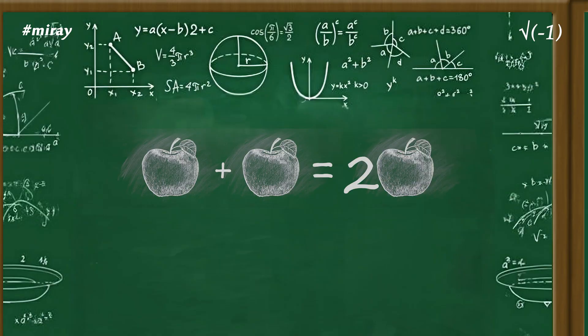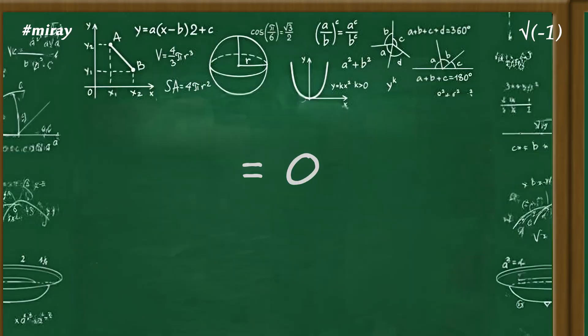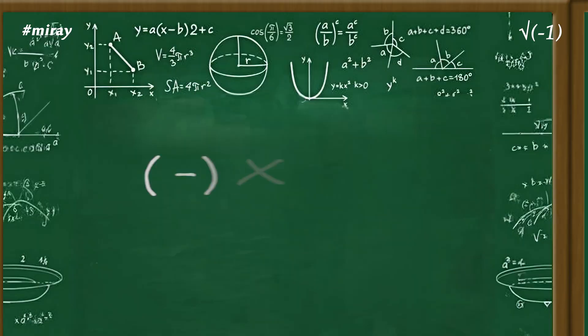My dear viewer, if I ask you to add an apple to an apple, you'd say it's equal to two apples. But what about if I remove the apples and simply said add? You'd say it equals zero. What about adding a negative apple to another negative apple? You may say that can't really be represented. And that exactly is the topic of today's episode.